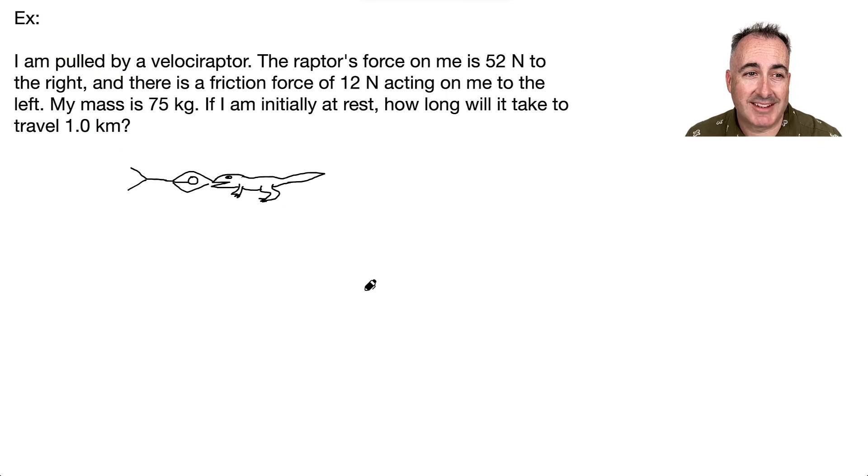So here we have an example. I really like dinosaurs, so sorry. But I'm pulled by a velociraptor, let's just say. So the raptor's force on me is 52 newtons to the right. And then there's a friction force that's 12 newtons to the left.